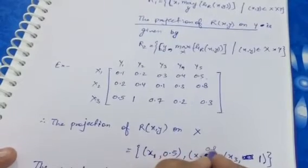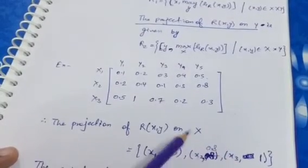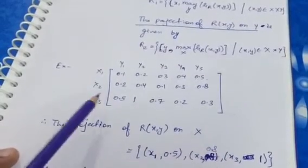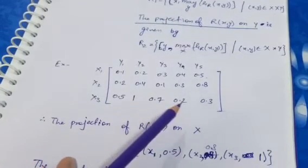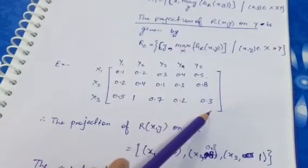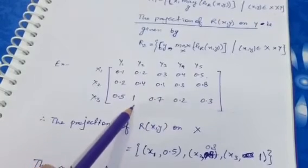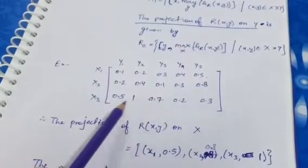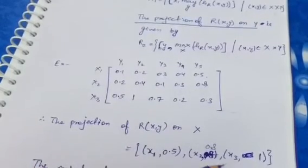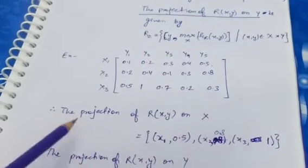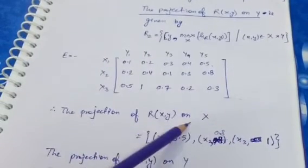For x3, the values are 0.5, 1, 0.7, 0.2, 0.3 — the maximum is 1, so for x3 it is 1. So this is the projection of R(xy) on X.